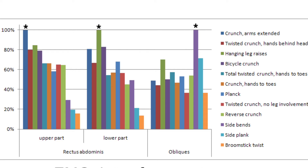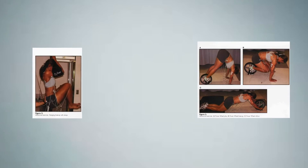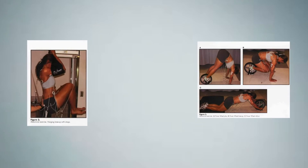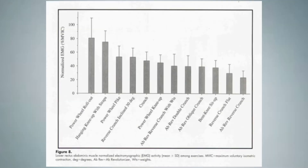The question is: which exercises should we do to train upper, lower, and obliques separately? According to a study by Kevin et al. on different ab exercises, it concluded that incline reverse crunches, ab wheel roll-outs, and hanging leg raises activated more ab muscles. We will have a look at what are the best exercises you can perform according to scientific literature.